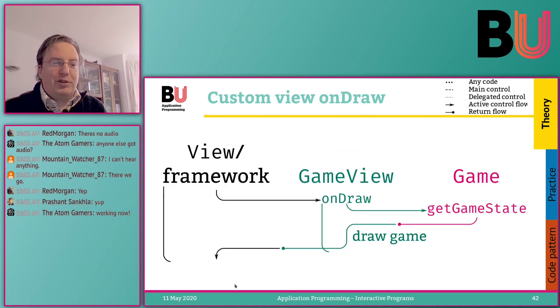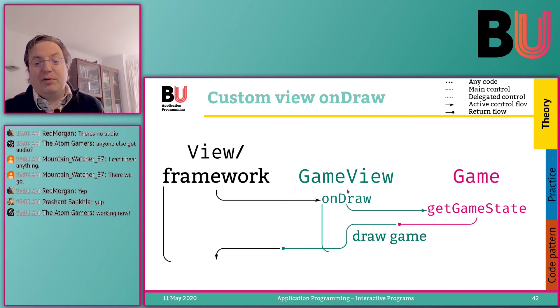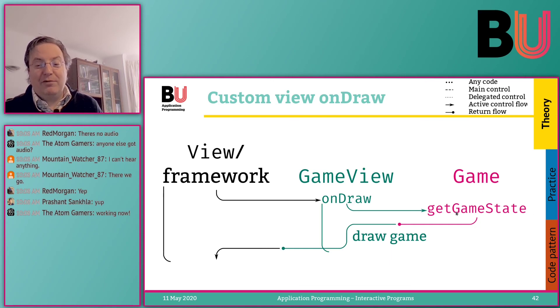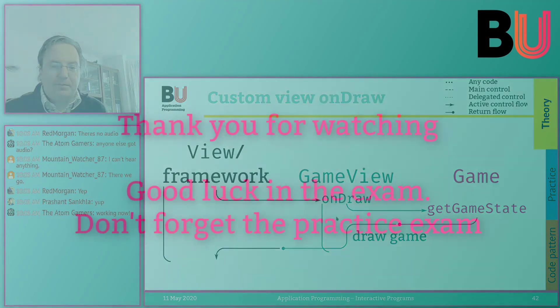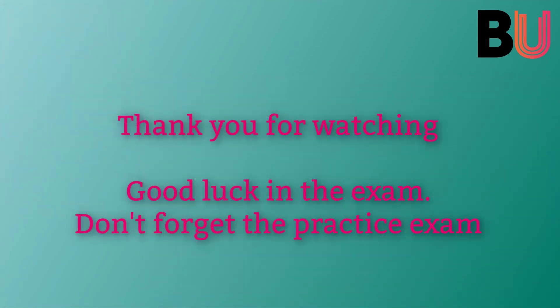The view also gives control back to the activity, and this is what onDraw does. At some point it will be called. Then we look up the state of the game, use that state to draw it. Then we look up the possibilities in the entire game and see the infrastructure.